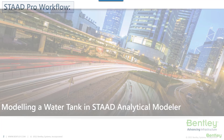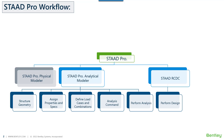STAAD.Pro has two modes available for creating a structure and assigning different properties, specifications, loads, and creating load combinations. The two modes are the physical modular mode and the analytical modular mode. In the physical modular mode, we can create the model using physical members — that is, create a model in such a way as it is physically constructed on site. Whereas in the analytical modular mode, a structure is modeled by starting to create nodes, which in turn are connected with each other either by linear members such as beams or columns, or by plate elements, which is the finite element modeling approach.